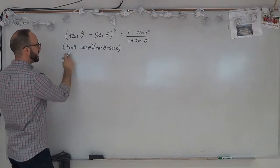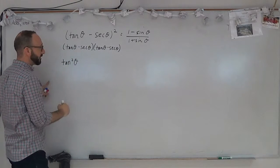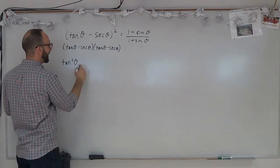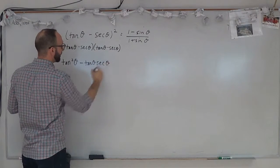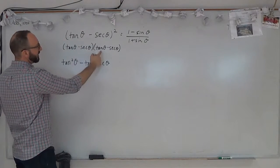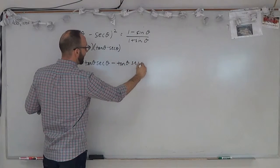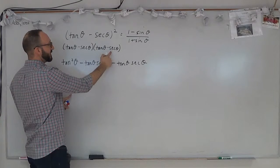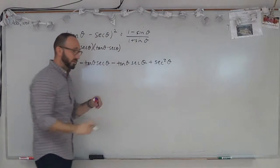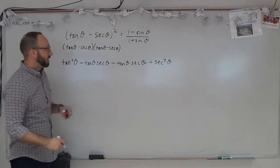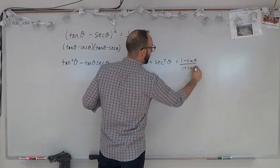Multiplying this out: tan theta times tan theta is tan squared theta. Tan theta times negative secant theta is negative tan theta secant theta. Negative secant theta times tan theta is another negative tan theta secant theta. And negative secant theta times negative secant theta is positive secant squared theta. This should equal 1 minus sine theta over 1 plus sine theta.